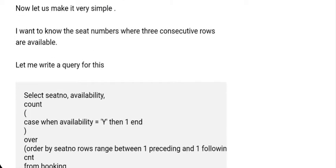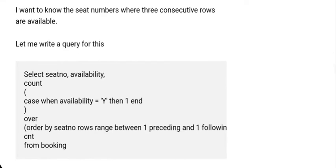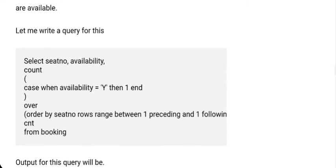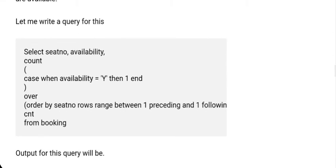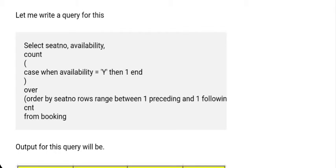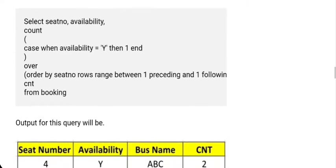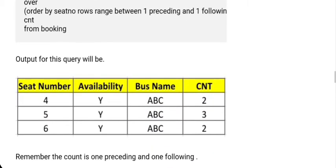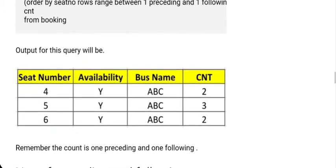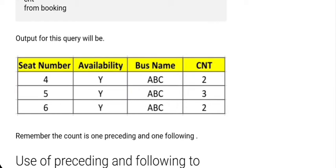Let's see how to frame the SQL for that. First we write an inner query to capture only those three records. The query selects seat number, availability, and a count of seat number using one preceding and one following row. You will get the output of those three consecutive available records.